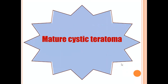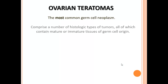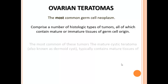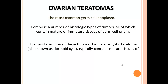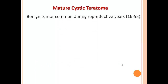So this is a mature cystic teratoma. Our topic today is about the mature cystic teratoma and germ cell tumors. Ovarian teratomas are the most common germ cell neoplasm and comprise a number of histological types all containing mature or immature tissue of germ cell origin. The most common is the mature cystic teratoma — formerly called dermoid cyst, but better termed mature cystic teratoma because it is composed of more than one component, typically containing mature tissues of ectoderm (skin or brain), mesoderm (muscle and fat), and endoderm (mucinous or ciliated epithelium). Mature cystic teratoma is a benign tumor commonly seen in the reproductive age group from 16 to 55 years.